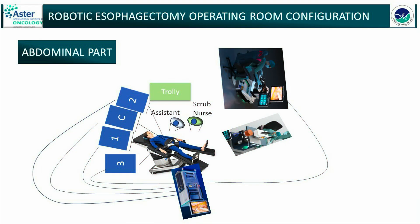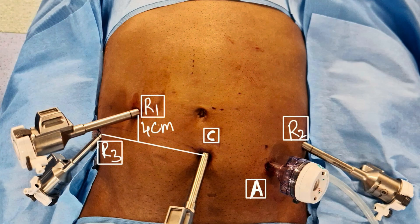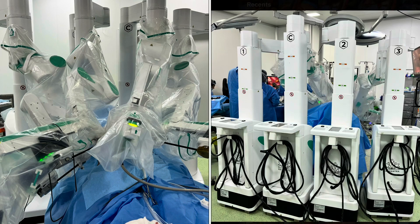The thoracic phase is completed. The patient is placed in supine position, the tube is changed to a single lumen tube, and the robot is redocked from the head end. The assistant and scrub nurse stand on the left side of the patient. The patient is placed in reverse Trendelenburg position with the right limb at a lower level to avoid any clashing with the arm. This is our standard robotic port placement for the abdominal part. The camera arm is docked from the head end, followed by the other arms, equally spaced to avoid any external clashing.